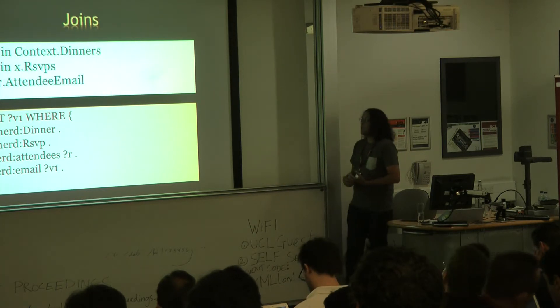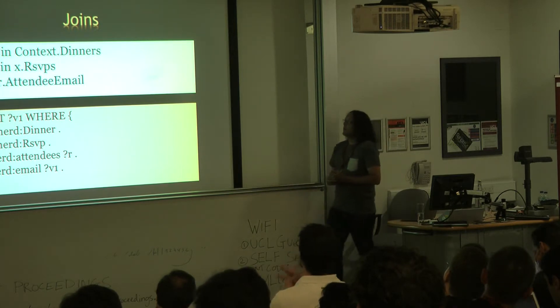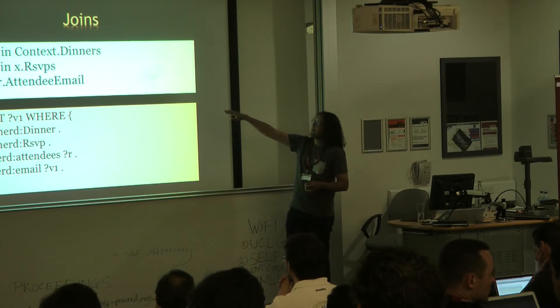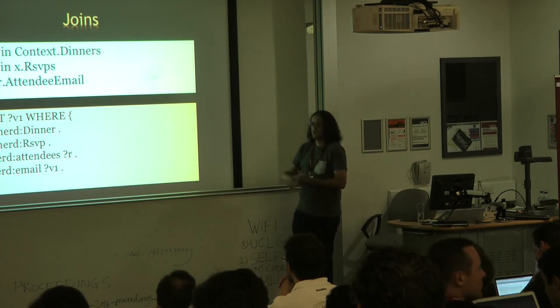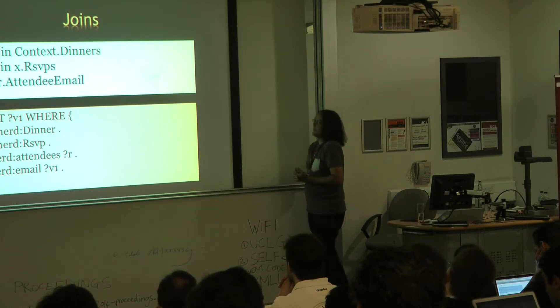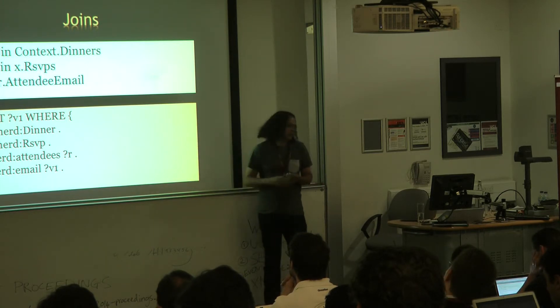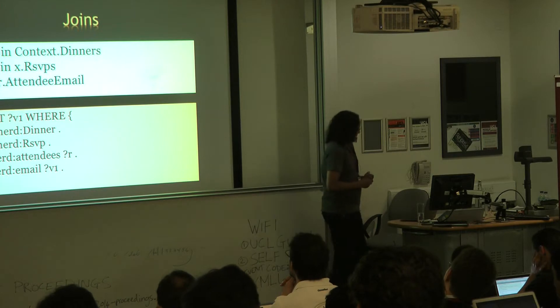Joins are similarly straightforward. In SPARQL we're just basically, in this case we're saying, for all of the dinners, find all the RSVPs, and select the emails of the attendees, and just return them all. All of the emails of all the RSVPs for all of those dinners. And it just becomes a bit more navigation, and then a single projection of the final variable that we want to get, in this case the email.